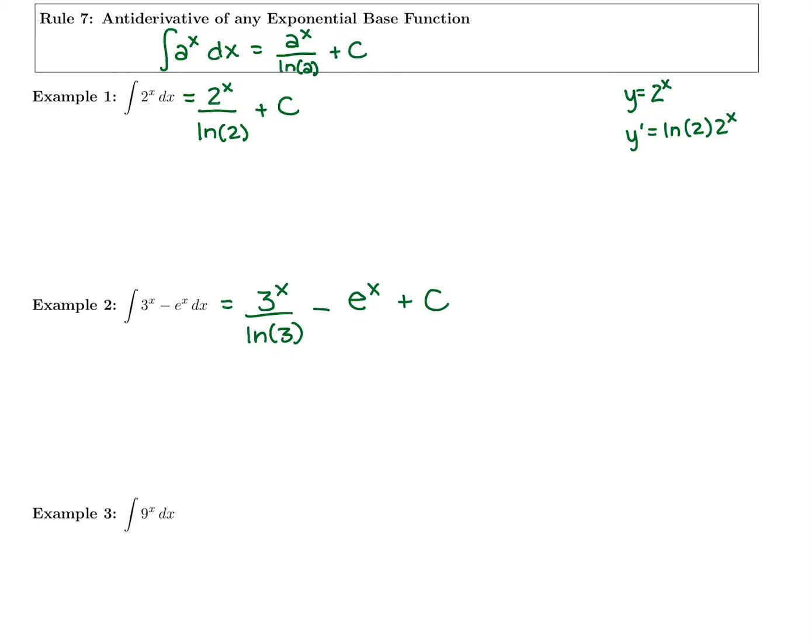Since ln of e is 1, it just takes extra time to write it for no reason. So you could try this last one on your own. It would be 9 to the x over ln of 9 plus c.